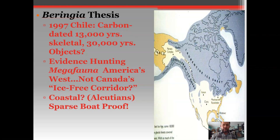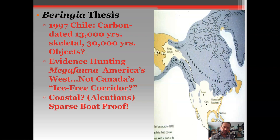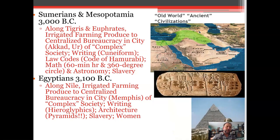In 1997 at Monte Verde, they found artifacts carbon-dated to 30,000 years old — well before the 13,000-year estimate. Some began suggesting that people may have come via the Aleutian Islands in reed boats that would have disintegrated, leaving no evidence. Again, science is doing its best but can only do so much with the limited evidence it has.